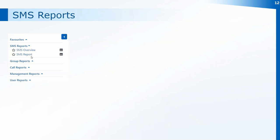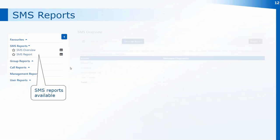There are two reports for SMS on Surgery Connect: the SMS Overview, which gives you a summary of the texts sent out, and the SMS Report, which shows the individual texts so you can see the actual content and also whether each message was delivered at the point it was sent out.